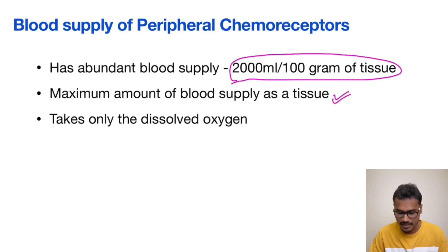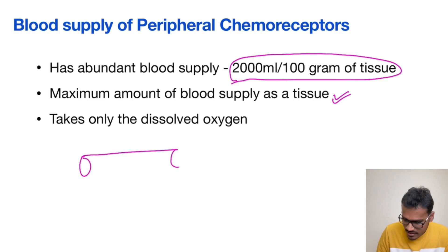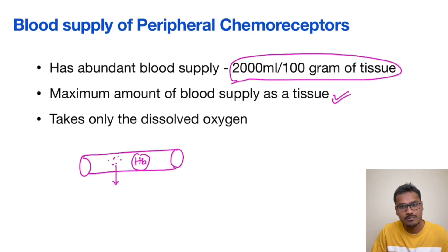The peripheral chemoreceptors receive a maximum blood supply and they use only the dissolved oxygen. As we have seen in the transport of oxygen, there are two forms: the dissolved form and the hemoglobin-bound form. In this case, the dissolved oxygen is sufficient for supplying the peripheral chemoreceptors.